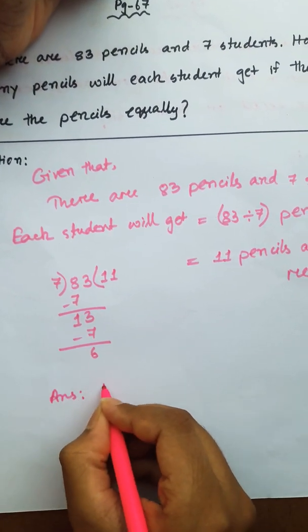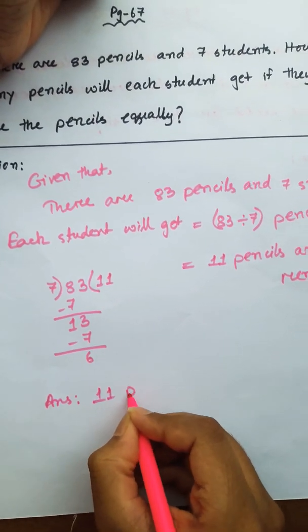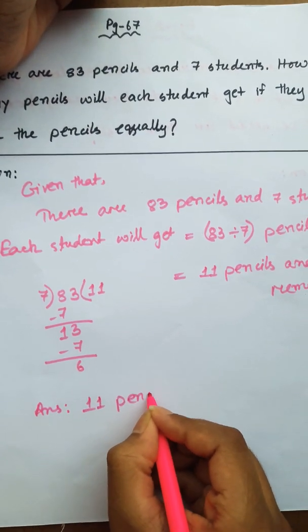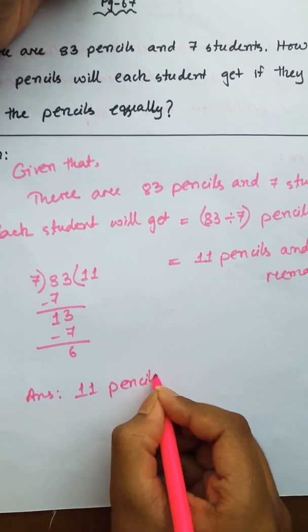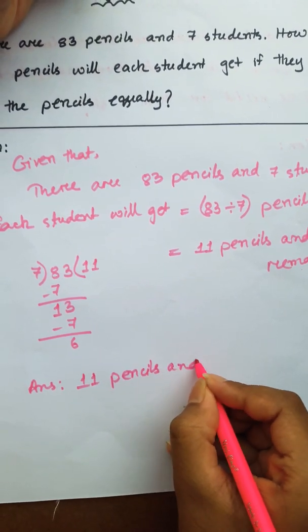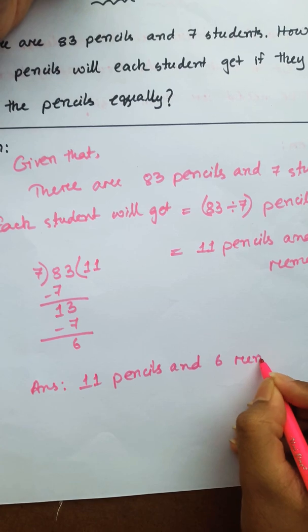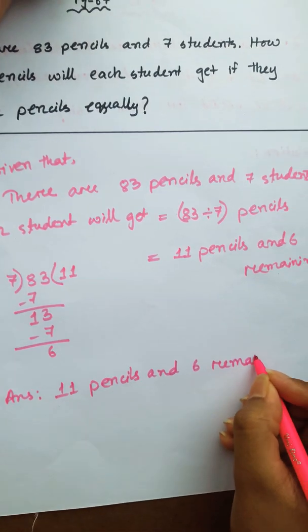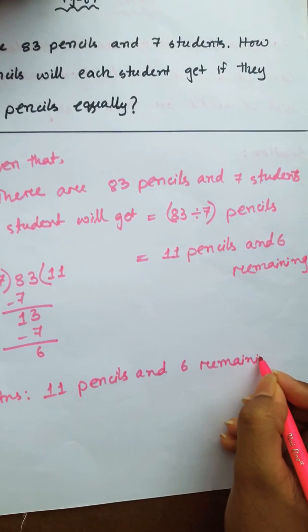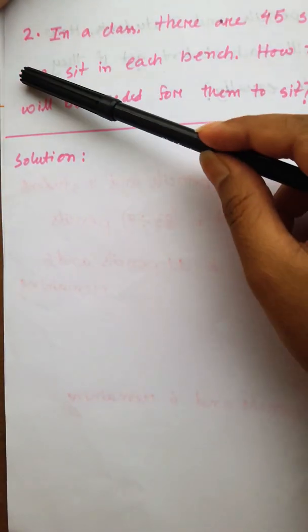Answer: 11 pencils and 6 remaining. Then page number 69.